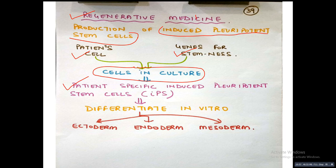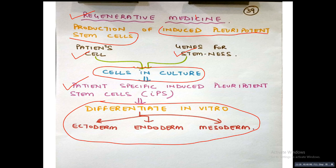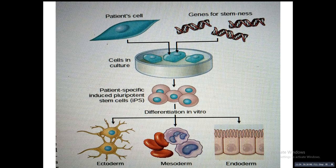These patient-specific induced pluripotent stem cells can then form multipotent stem cells and differentiate into cells of the ectoderm, endoderm, and mesoderm. The basic concept is that patient cells are induced with stem cell properties artificially in culture, and as shown in the diagram, the patient cell and genes providing stem cell properties are placed in vitro, inducing patient-specific induced pluripotent stem cells that give rise to more differentiated tissues.